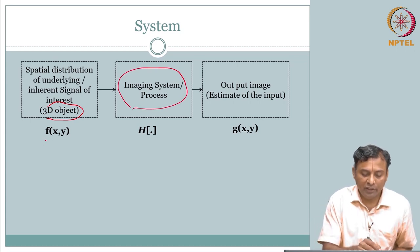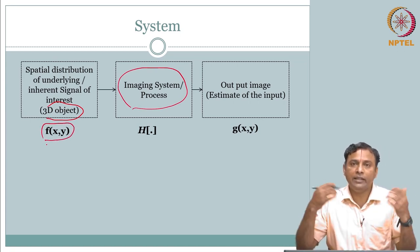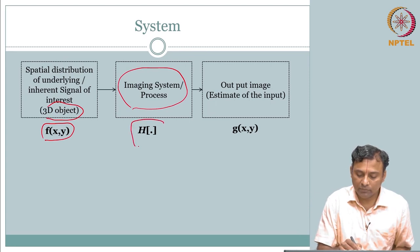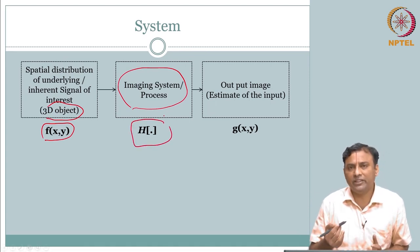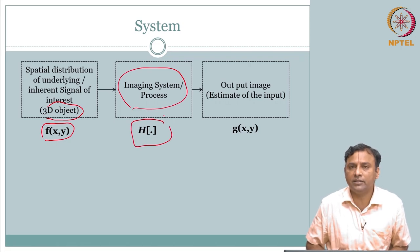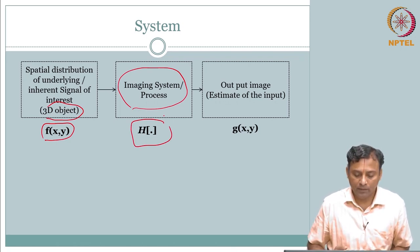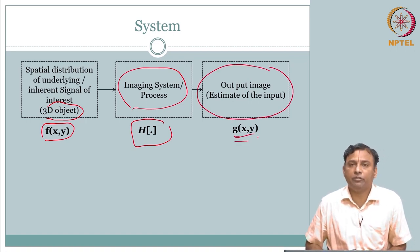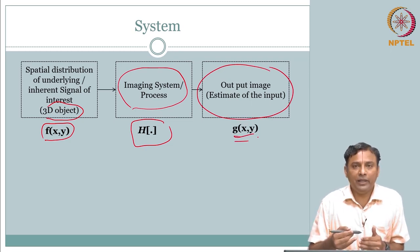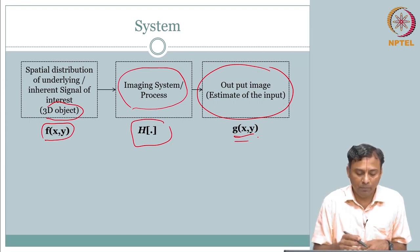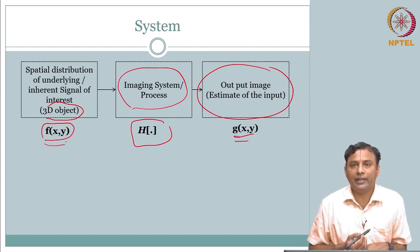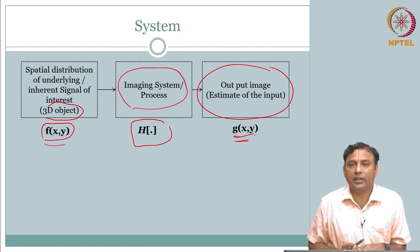We will denote f(x,y) as the underlying input spatial distribution function, and your system is going to be represented by h - very typical, as you would have seen in 1D signals and systems. The output image is going to be represented by g(x,y). The general intention is to use f(x,y) for input and g(x,y) for output.